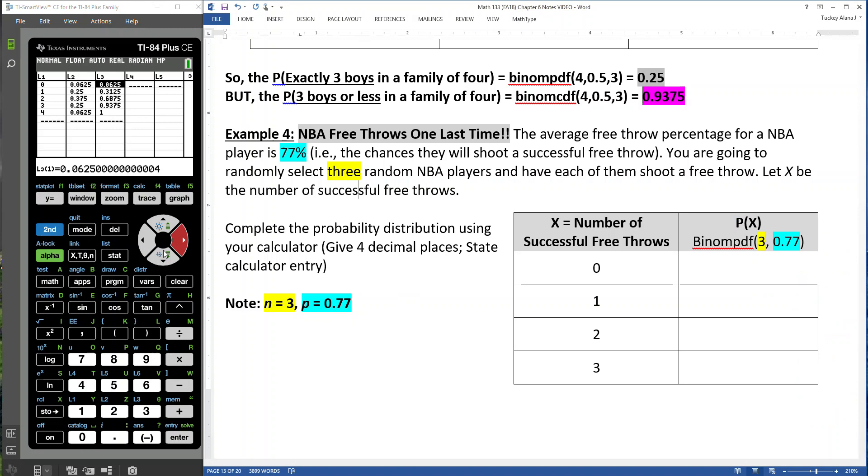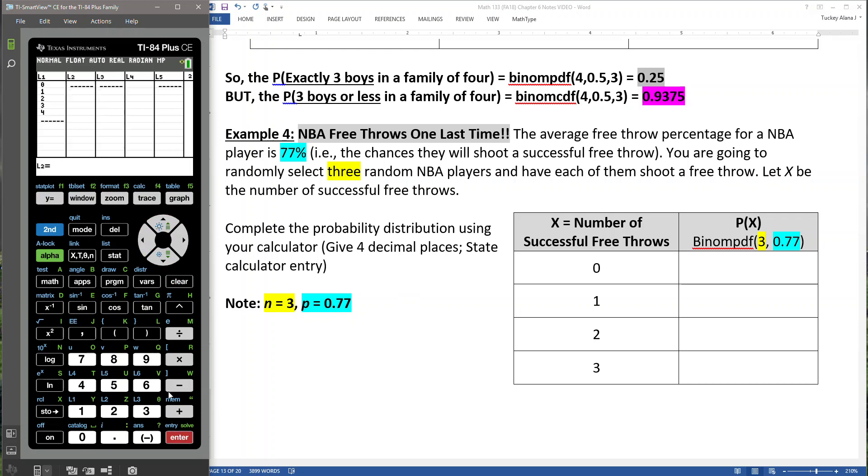Let me go back to, well, actually, let me clear out L3. I don't need it now. So clear this out, and then I go here and clear this out. We're only talking about three free throws. Say that five times fast. So let me delete my four here. So if I quit and go to second distribution, binom PDF, that's letter A, because I'm trying to figure out the probability of exactly zero free throws, one free throw, and so on. So binom PDF, three trials, 0.77.